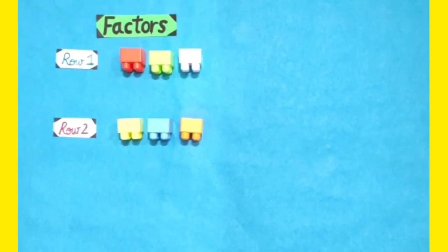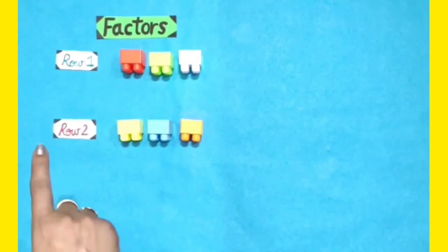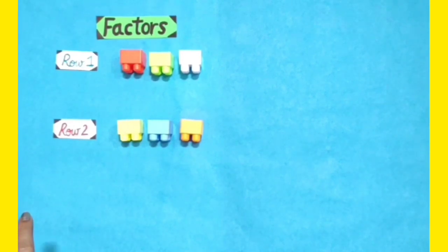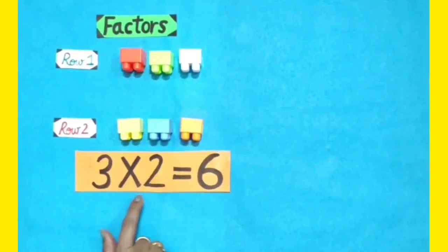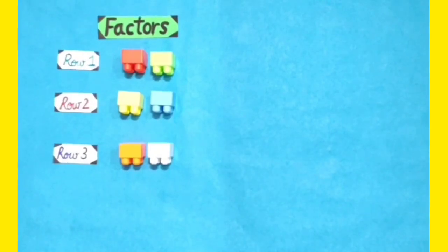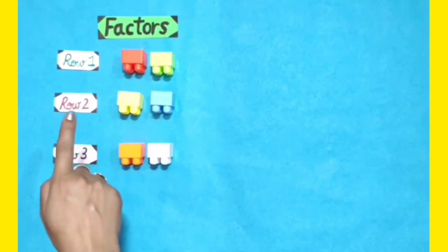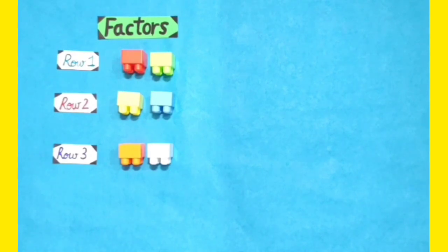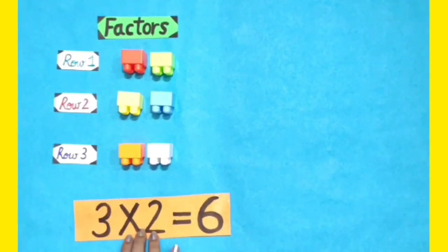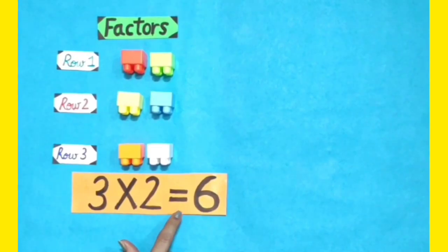Dear students, by arranging these 6 blocks in 2 rows, we get 3 blocks in each row, so this can be represented as 3 into 2 is equal to 6. By arranging these blocks in 3 rows, we get equal groups of 2 blocks in each row, so in multiplication form we can represent it as 3 into 2 is equal to 6.